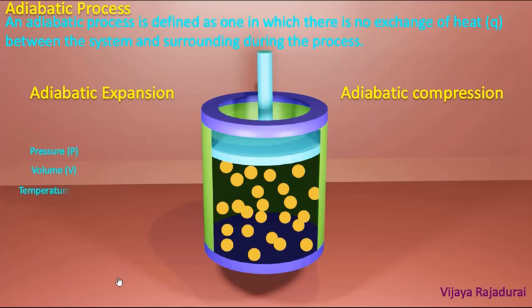When we draw the graph for an adiabatic process — either adiabatic compression or adiabatic expansion — the values of pressure, temperature, and volume change from one state to another state, that is from the initial state to the final state, and no heat transfer takes place.